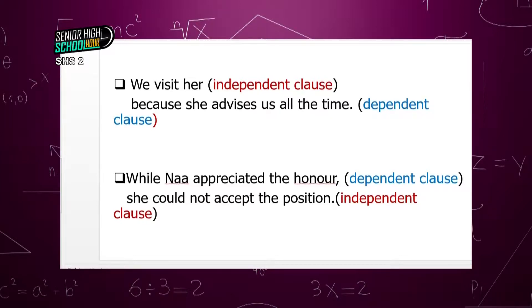Looking at another example: 'while now appreciating the honor, she could not accept the position.' 'She could not accept the position' is the main clause, and 'while now appreciating the honor' is the dependent clause. A dependent clause requires an independent clause to make sense, and they are introduced by subordinating conjunctions such as 'because,' 'after,' 'as soon as,' 'if,' 'so that.' These conjunctions have different functions — some give reasons, some show purpose or time, others give concession.